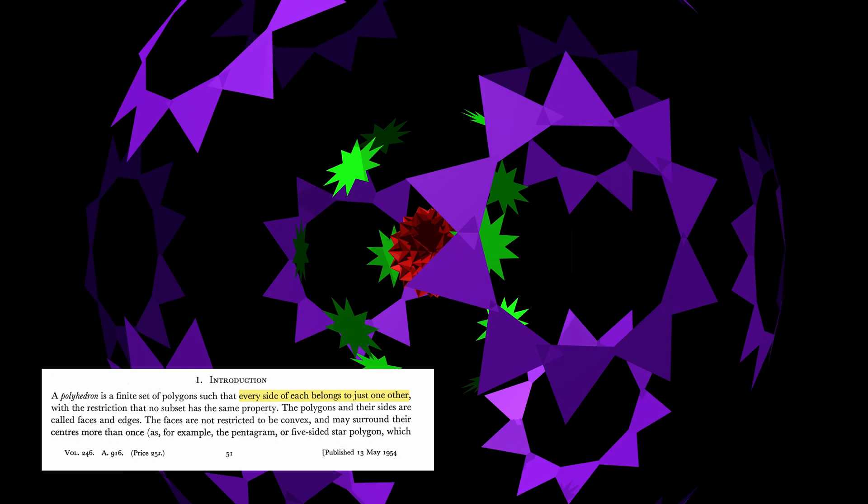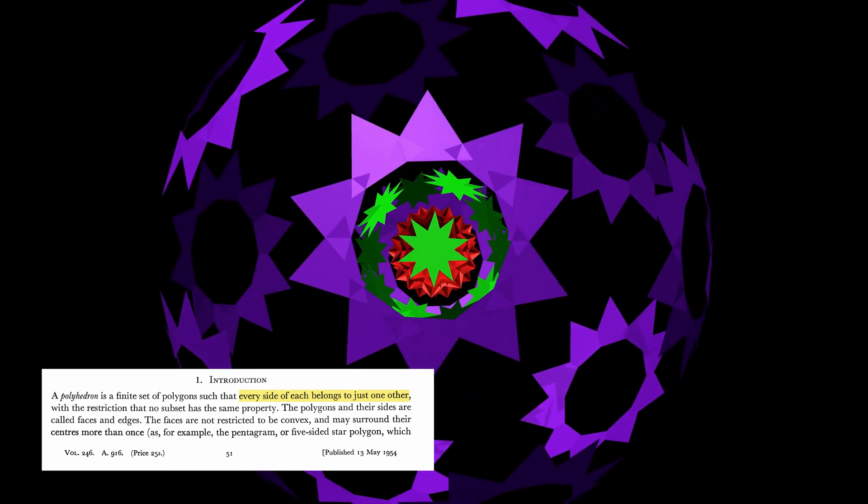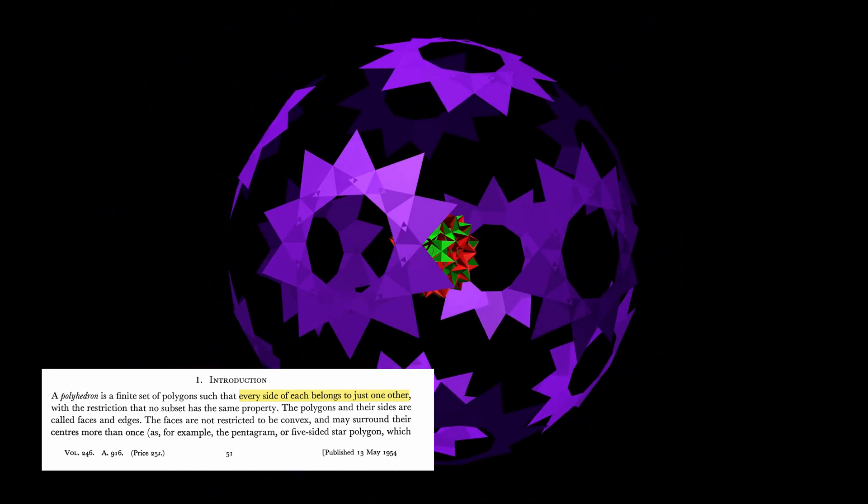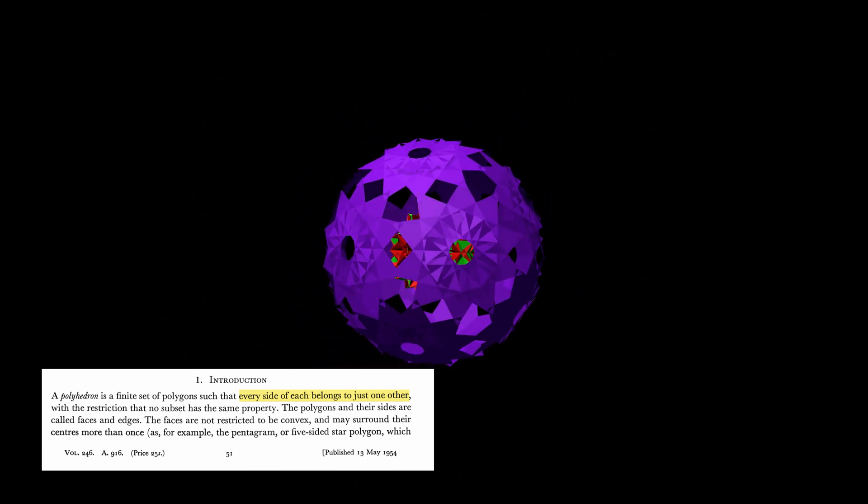So by their definition, Skilling's figure is clearly invalid, and Coxeter, Miller and Longuet-Higgins did indeed find all uniform polyhedra.